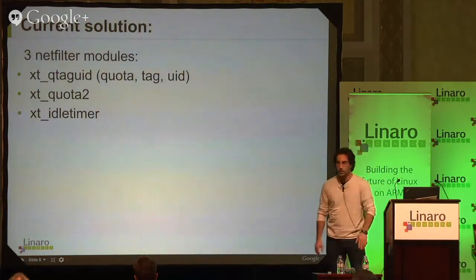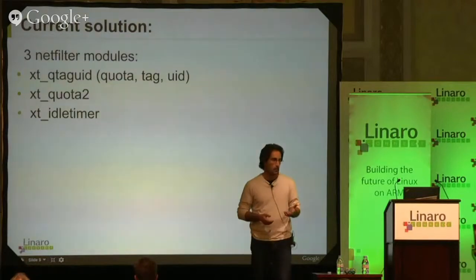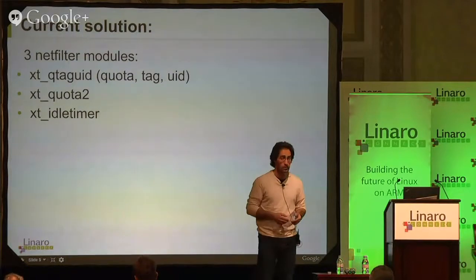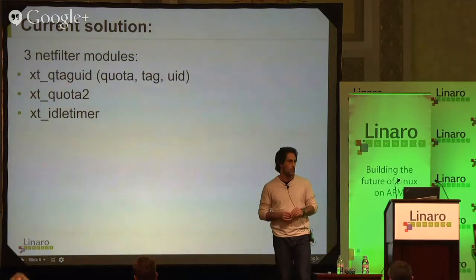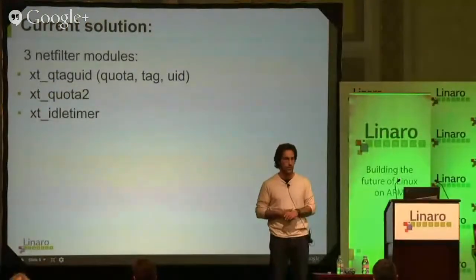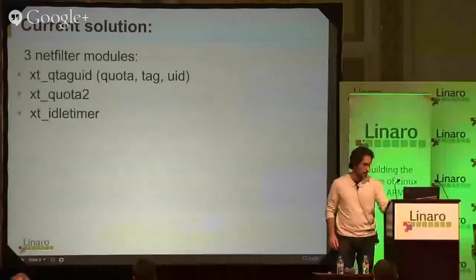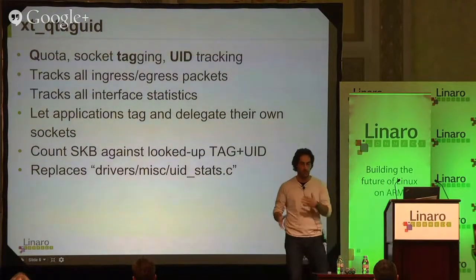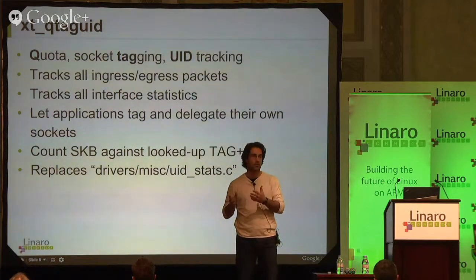They implemented that functionality using three Netfilter modules: QtagUID, Quota2, and IdleTimer. We'll go through each of them, see what they do, and from there present the solution that Linaro and the various upstream maintainers have come up with in order to make everything upstreamable. QtagUID is the main entity that keeps the statistics on sockets as they go through applications.